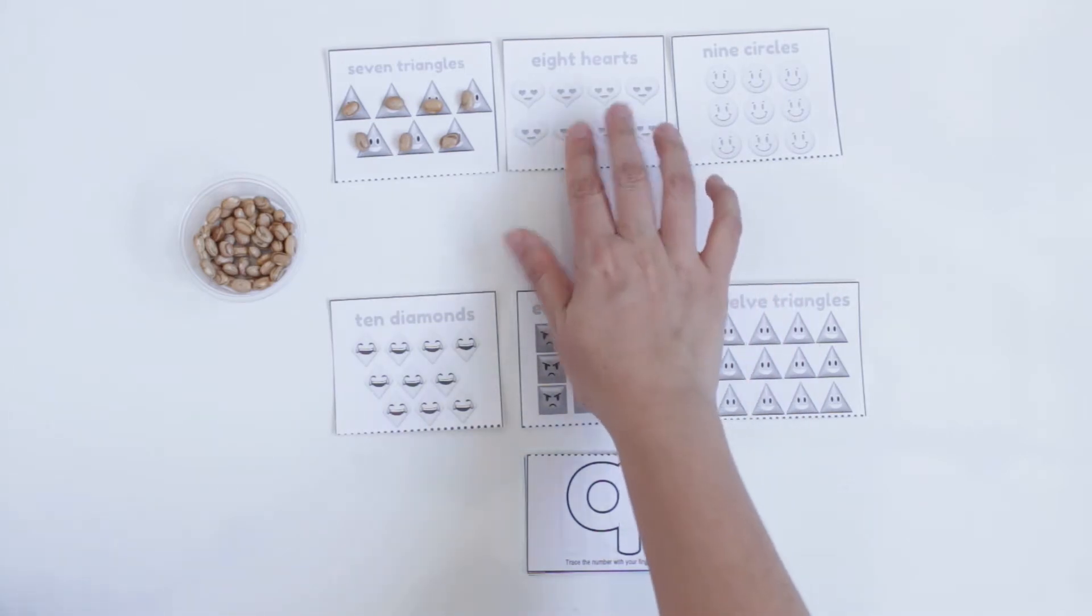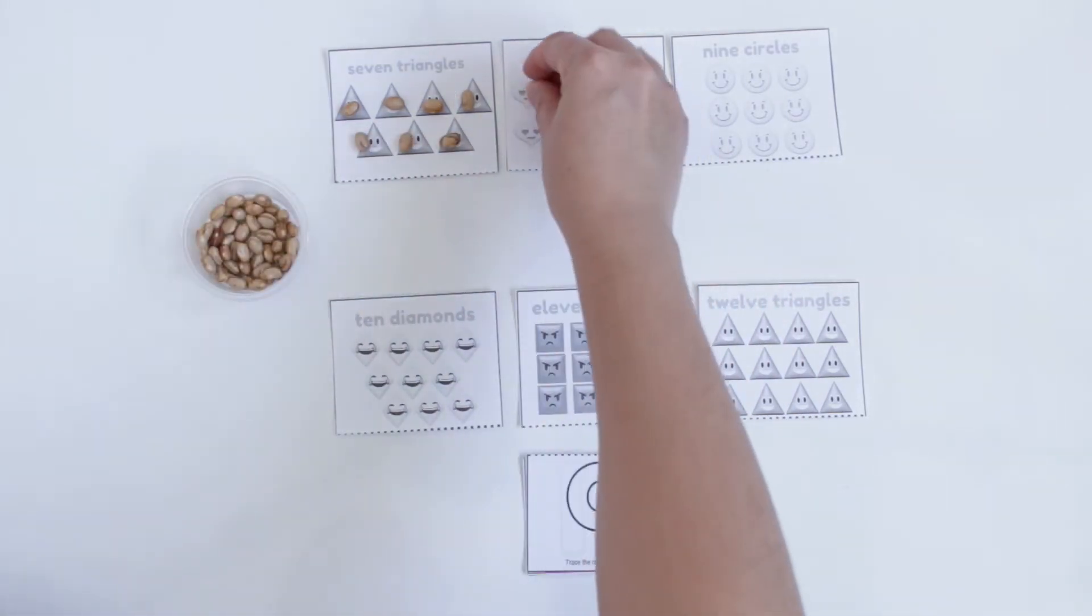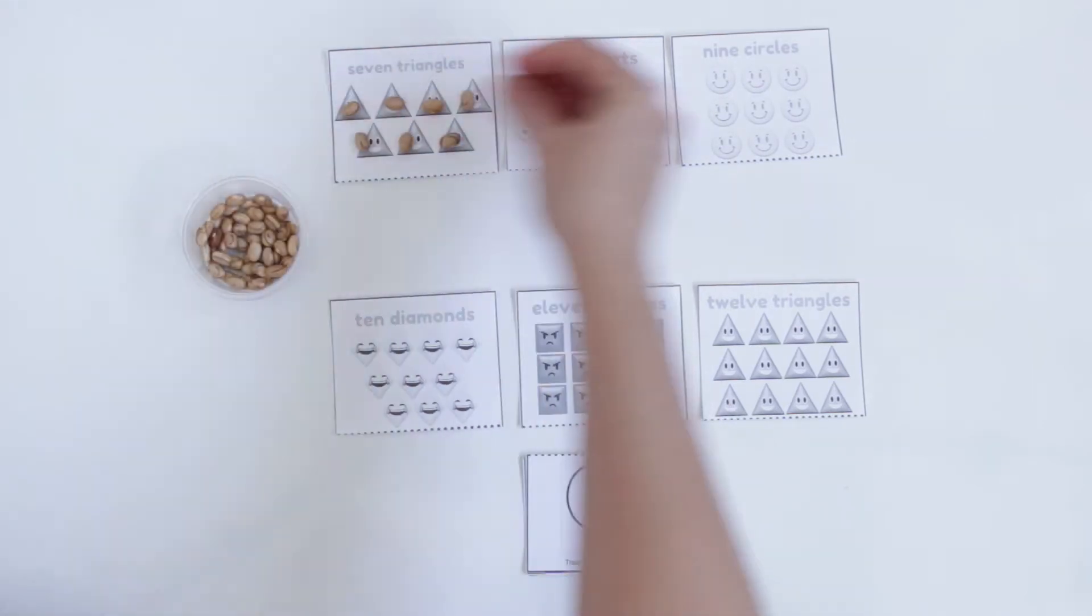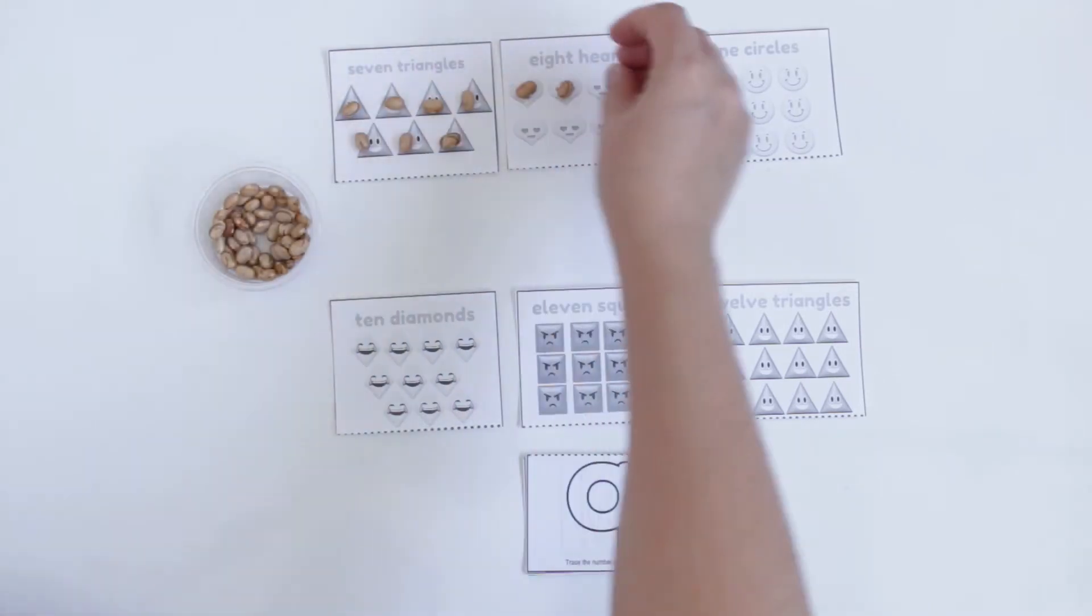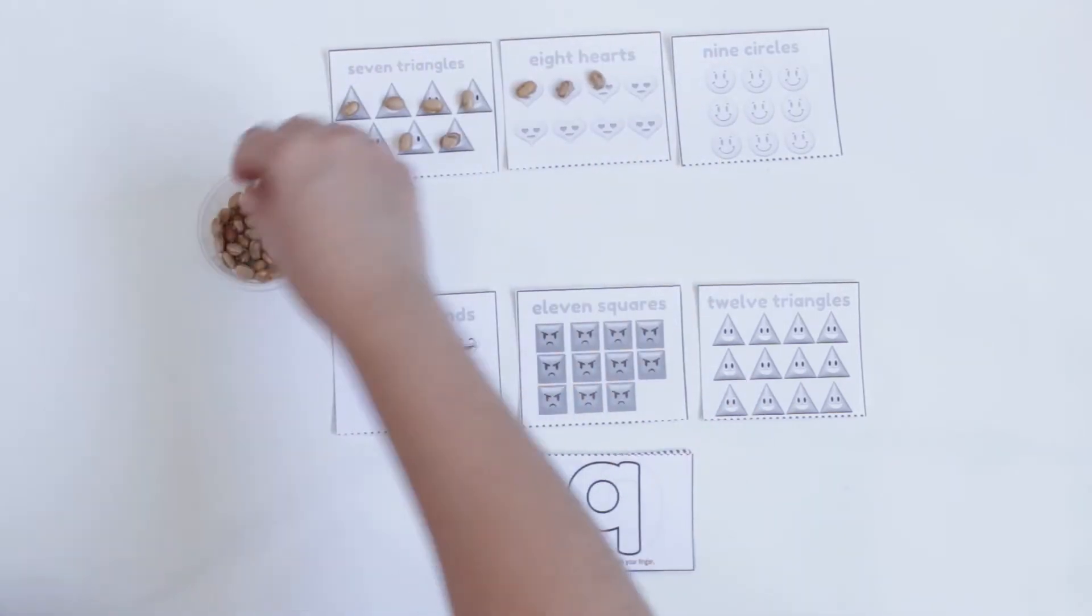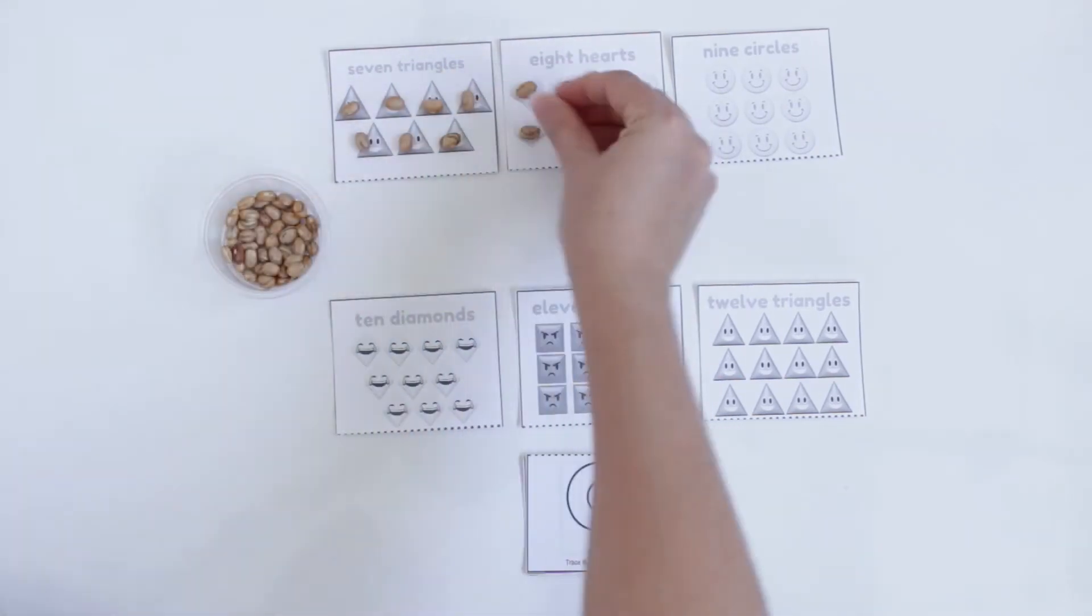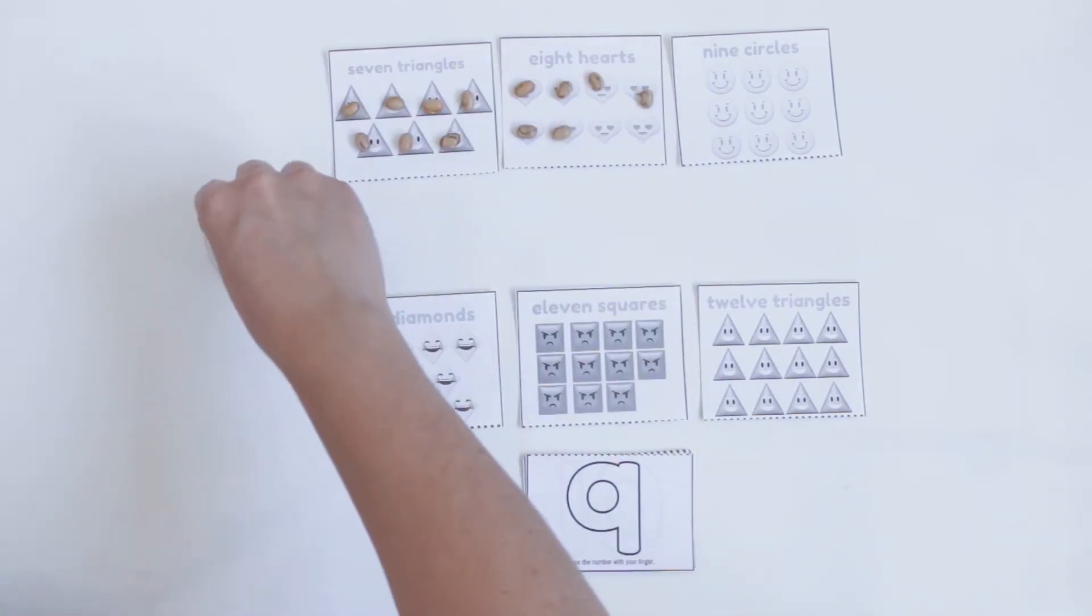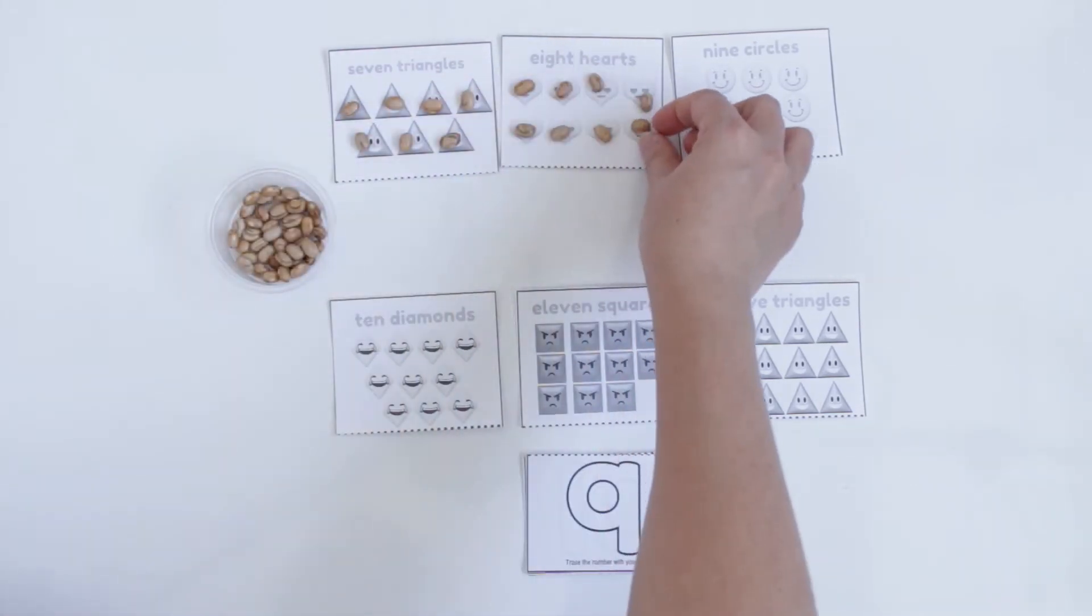Here, what do I have? Hearts, how many? Let's count using this: 1, 2, 3, 4, 5, 6, 7, 8.